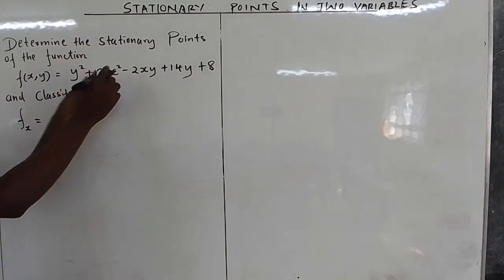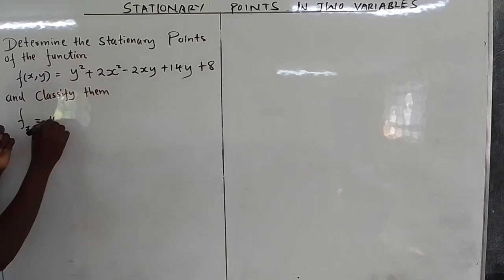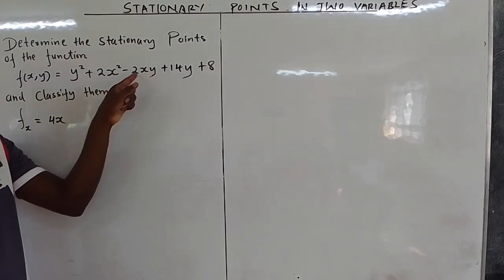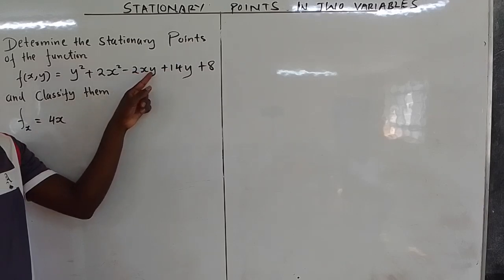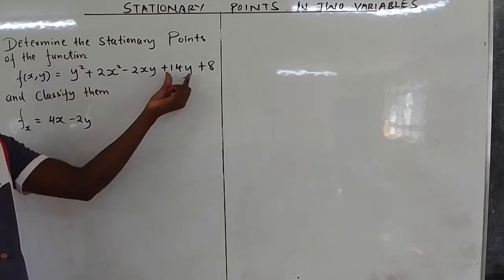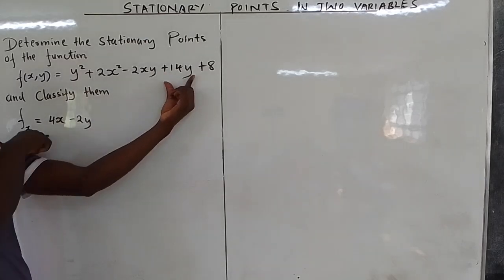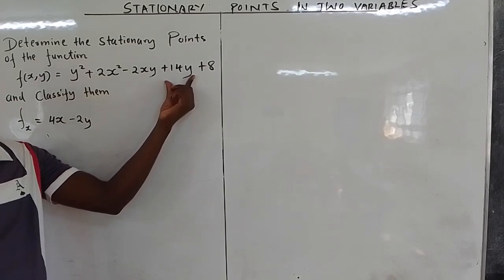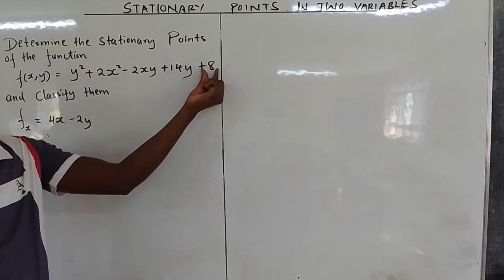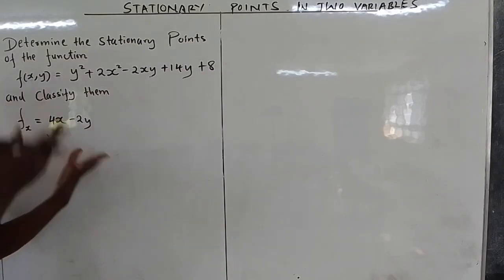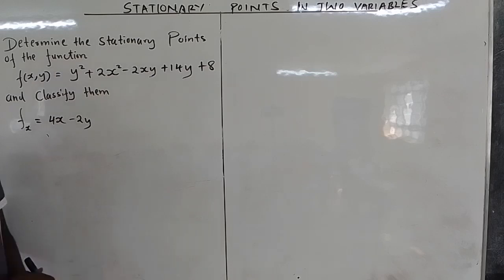Then, differentiating 2x² partially with respect to x, you get 4x. Then, for the -2xy term, -2y is a constant, so differentiating x gives 1, and you remain with -2. Then 14y is a constant with respect to x — zero. Anywhere you don't see x, it's a constant, and differentiating a constant gives zero.